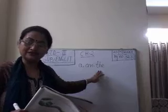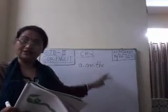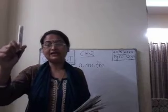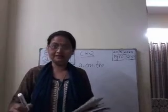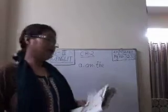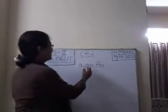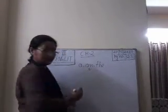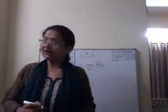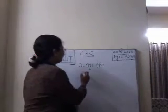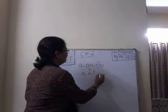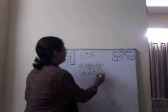We know this — before countable nouns we use a and an. Suppose I have one pen, then what I am writing? I have a pen — means I have one pen. And we all know that we use 'an' before the naming word, before the noun that begins with a vowel sound. Vowels are a, e, i, o, u.